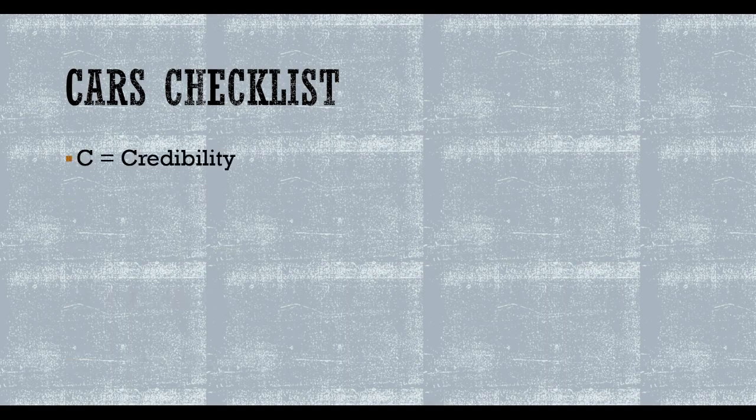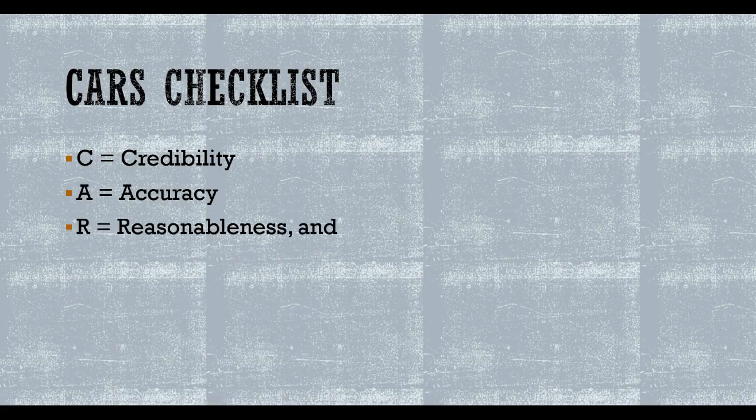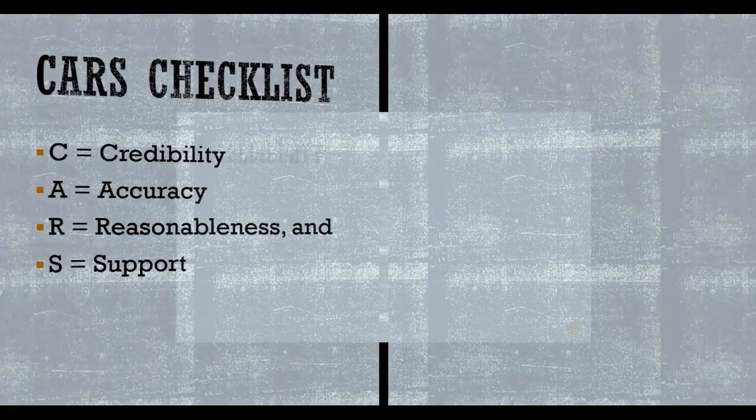To find out how credible your source really is, you can use the CARS checklist, where C stands for Credibility, A for Accuracy, R for Reasonableness, and S for Support. This checklist is designed for ease of learning and use.